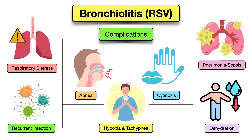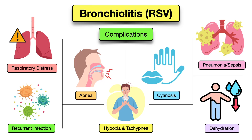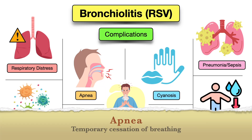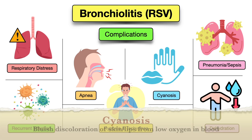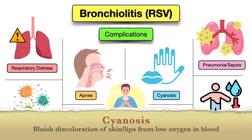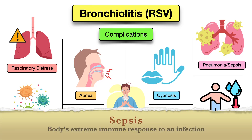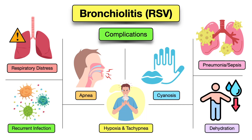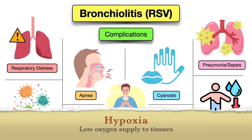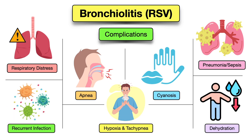What are some complications of bronchiolitis? These may include acute respiratory distress or respiratory failure, apnea (temporary cessation of breathing), and cyanosis (bluish discoloration from low blood oxygen). Bronchiolitis can also be complicated by or turn into pneumonia, and in rare occasions bacterial involvement such as pneumonia can progress to sepsis — an extreme immune response to infection. Other complications include recurrent infections (especially RSV), hypoxia (low oxygen supply to tissues), tachypnea, and dehydration.